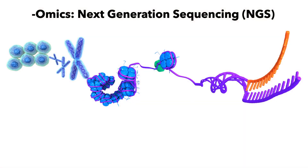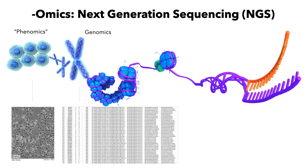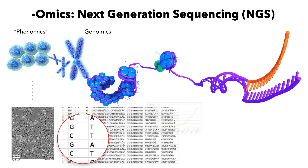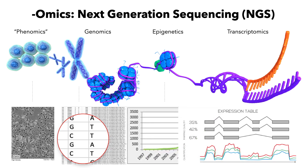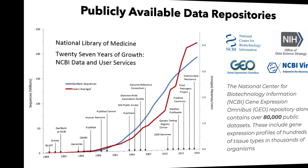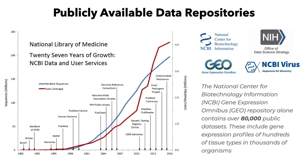A lot of breakthroughs in bioinformatics are a result of high-throughput technologies like next-generation sequencing that generate billions of data points on genes, proteins, and other molecules which characterize biological systems. These data are compiled into repositories that can be systematically studied to understand and establish trends for many applications.